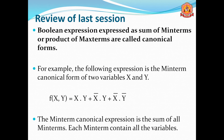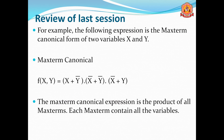In the last session we discussed about Boolean expressions or Canonical Forms, where a Boolean expression expressed as a sum of Min Terms or Product of Max Terms are called Canonical Forms. The Min Term Canonical Expression is the sum of all the Min Terms, and each Min Term should contain all the variables. The Max Term Canonical Expression is the product of all the Max Terms, and each Max Term should contain all the variables.